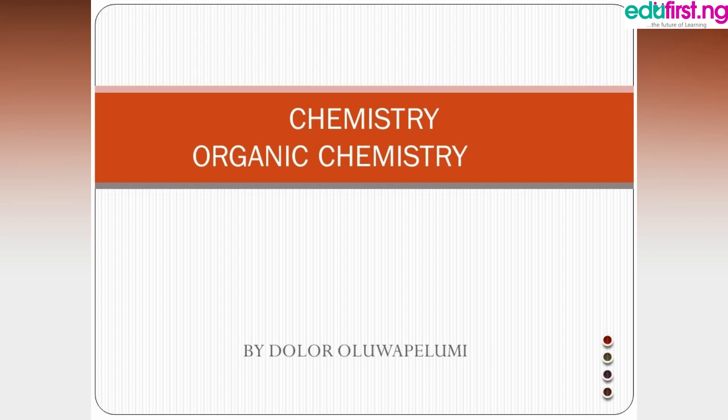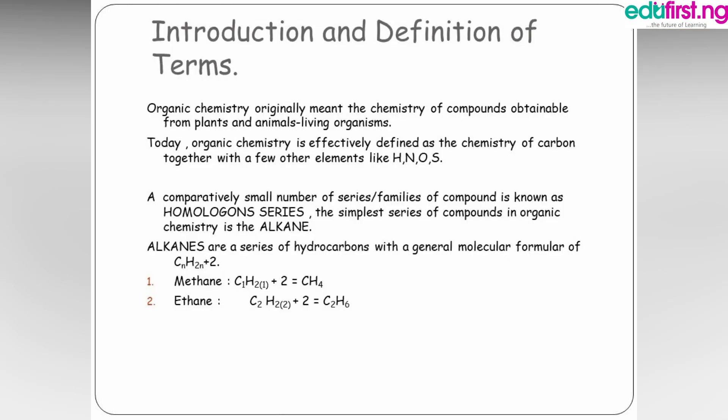Hello everyone and welcome to class. Today's class will be looking into naming of organic compounds. Organic chemistry originally meant the chemistry of compounds obtainable from plants and animals — living organisms. Today, organic chemistry is effectively defined as the chemistry of carbon together with a few other elements like hydrogen, nitrogen, and oxygen. Organic chemistry is defined as the chemistry of carbon because hydrocarbons always consist of carbon and hydrogen.